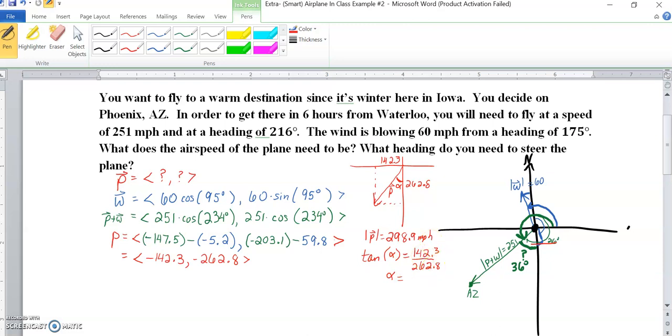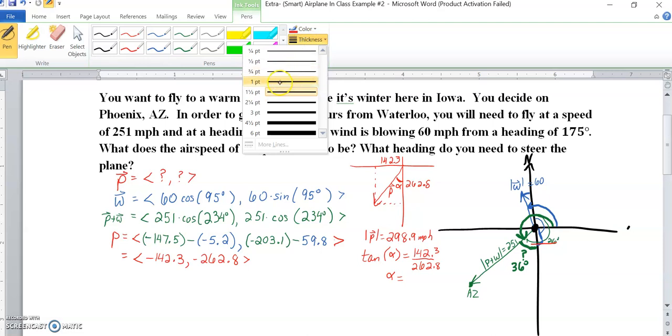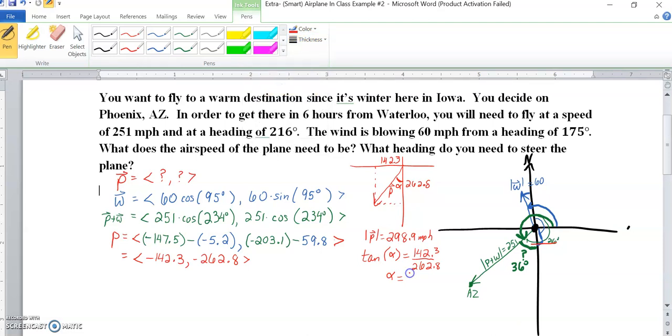So we want to find alpha, we say alpha is the tangent inverse of this, 142, so let me run that quick, alpha ends up at 28.4 degrees.